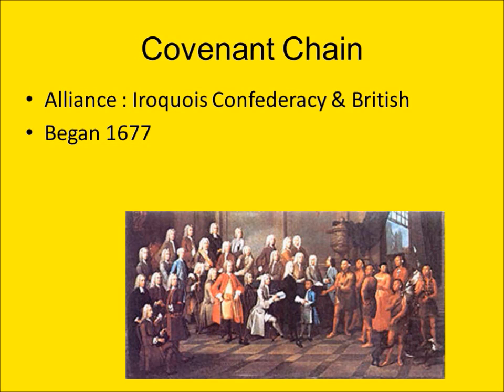The Iroquois believed, as a result of this treaty, the British owed them — their brothers — military protection against the French. The British, however, believed this was not a binding military treaty, but more like a mutual aid treaty or a friendship agreement. The British had a legal system in which contracts could be drawn up and modified or even canceled with the use of lawyers and courts. The Iroquois, though, believed that a contract once negotiated was binding forever — that you couldn't go back and renegotiate the terms. These cultural misunderstandings led to later issues of mistrust and accusations of treaty violations on both sides.